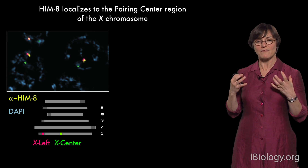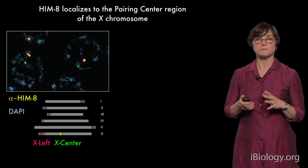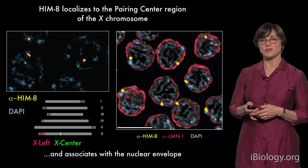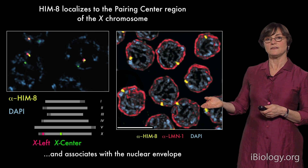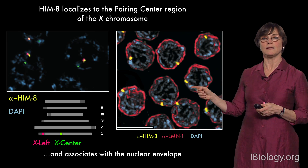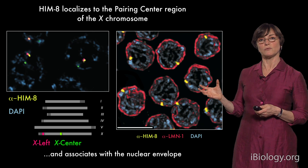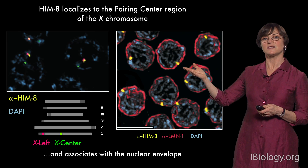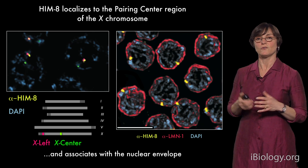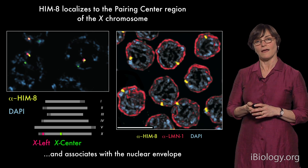It looks like we have a bona fide protein that binds to the X chromosome and is required for its pairing and synapsis during meiosis. We also stained these nuclei for the nuclear lamina using an antibody against the lamin protein, which forms a matrix underlying the nuclear membrane, to mark the nuclear periphery. What we can see is that the HIM8 spot in each nucleus is plastered right up against the edge of the nucleus. We wondered what this interaction with the nuclear envelope is about — and I'll tell you more in my next segment.